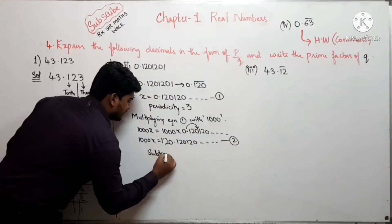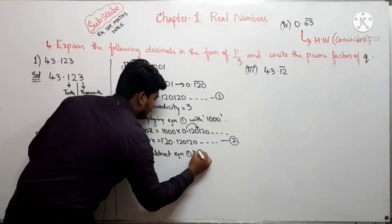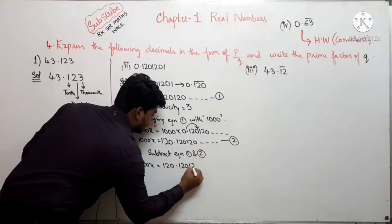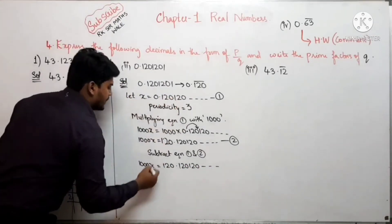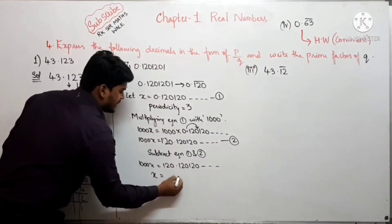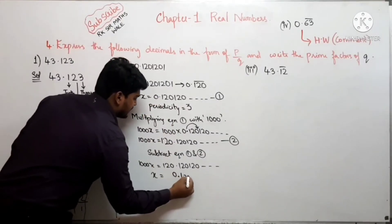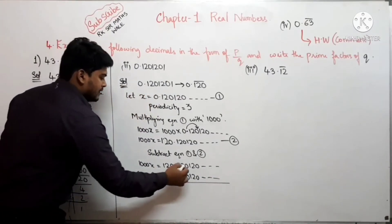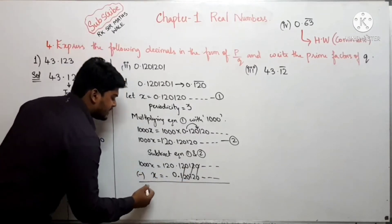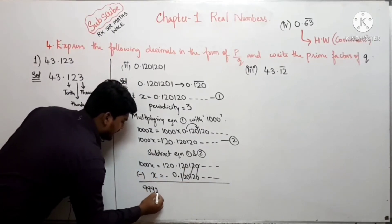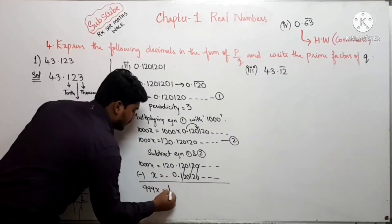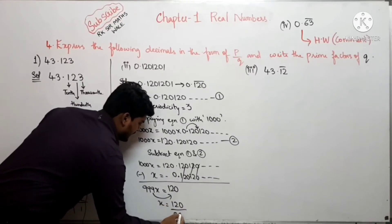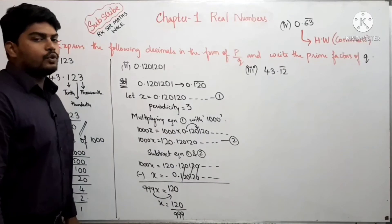Now subtract equation 1 from equation 2: 1000x = 120.\(\overline{120}\) minus x = 0.\(\overline{120}\)। Repeating part cancel हो जाएगा। 999x = 120, इसलिए x = 120/999 — यह आ गया p by q form में।